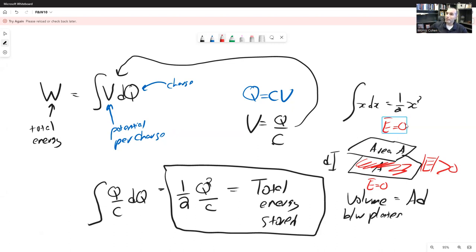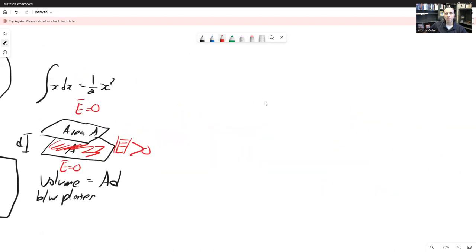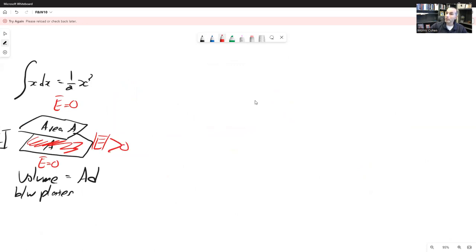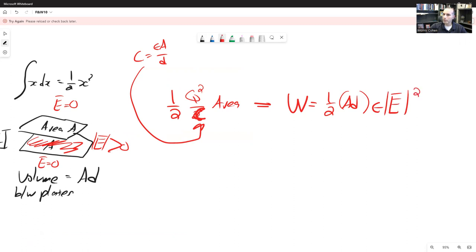We also know the total energy that's stored inside this volume. From this, we can figure out basically what the energy stored in electric field is. It's going to be one-half times Q squared over C. We also know that C equals epsilon times A over D, so we can substitute that in. You end up with the total energy stored equals one-half times AD times epsilon times the magnitude of the electric field squared.